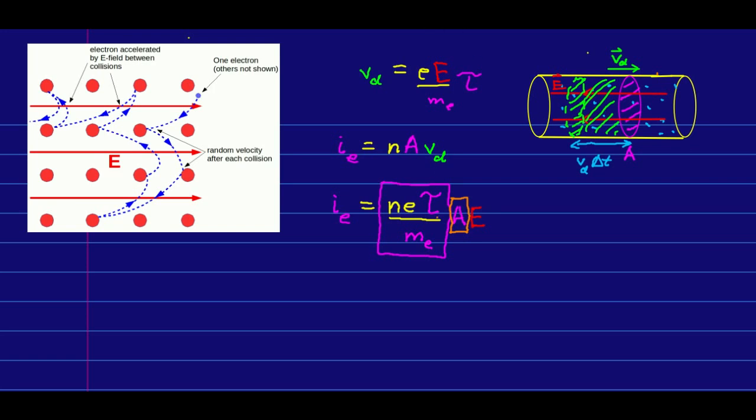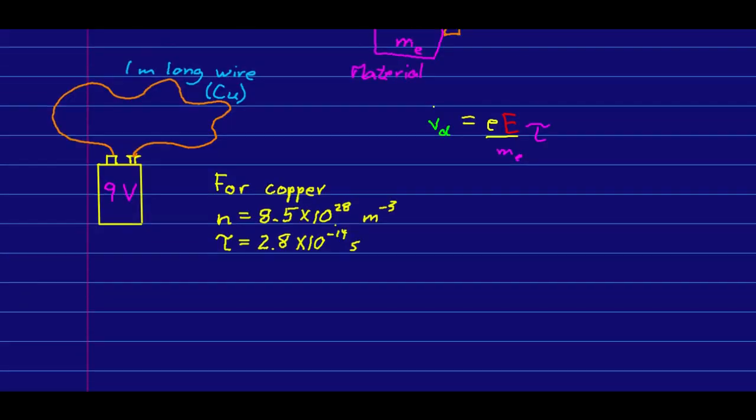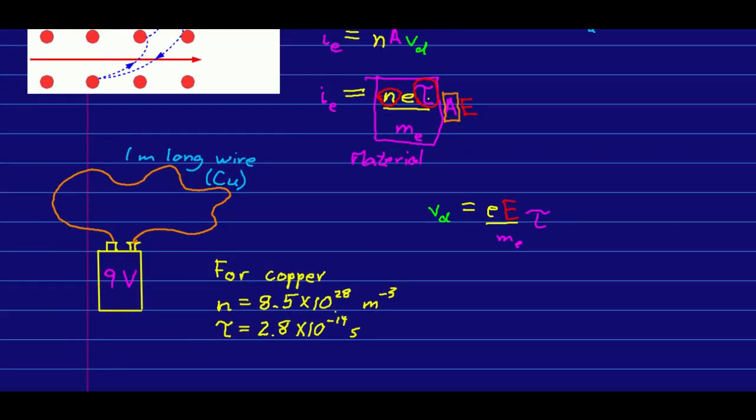In particular, note that there are these quantities that you might think are rather difficult to know, the electron density and the time between collisions. And these are difficult to measure, but have been measured, and you can often look them up as tabulated values for a given metal. I think the most surprising thing about all of this is that the collision time is a property of the material.